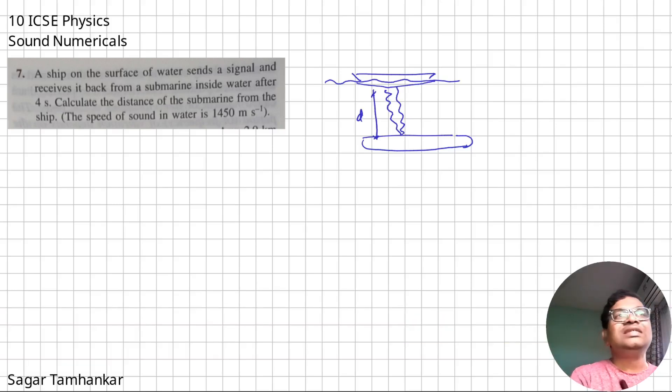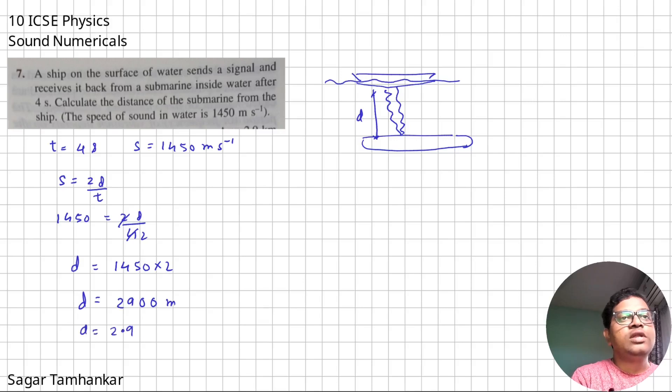So they are asking how much is this distance. Time is 4 seconds, speed is 1450 meters per second. So speed equals 2D over T. 1450 is 2D upon 4, so the distance is 1450 into 2, and that distance is 2900 meters. So that is 2.9 kilometers. The distance between the ship and the submarine is 2.9 kilometers.